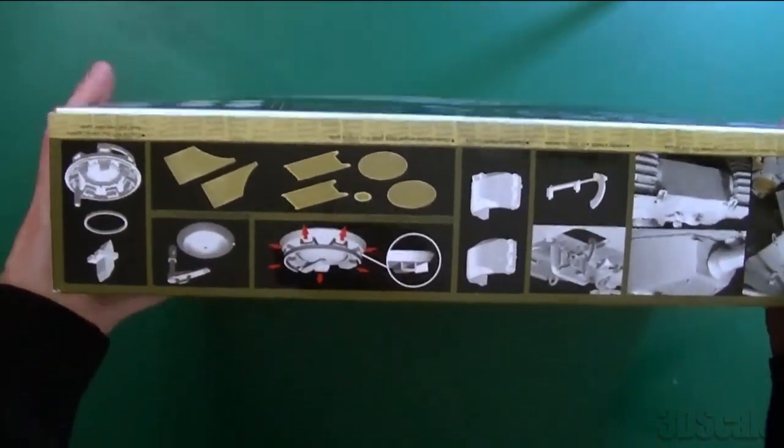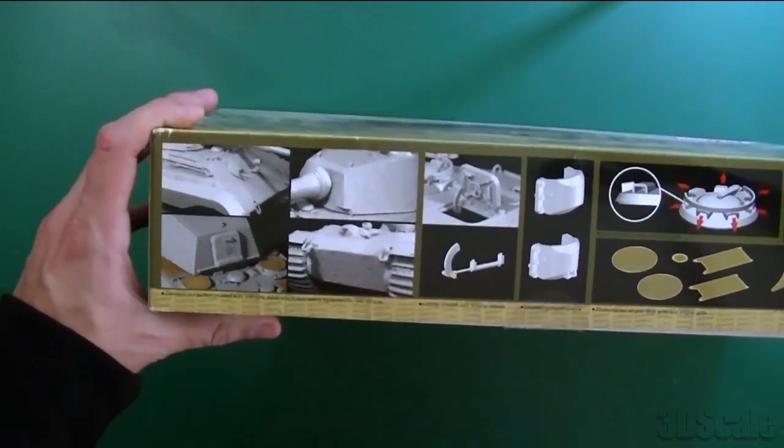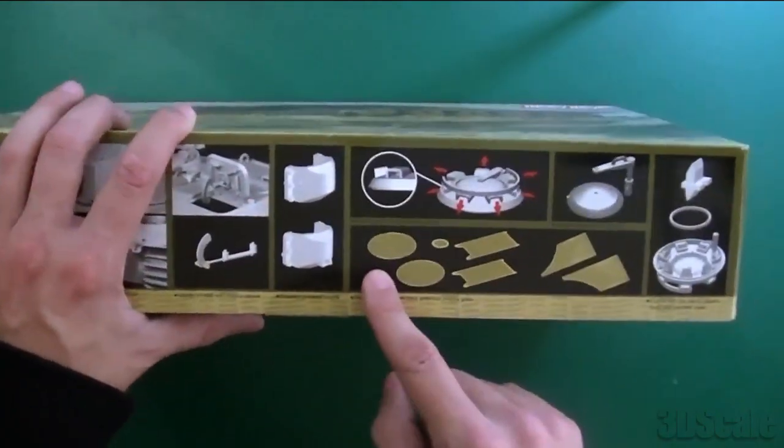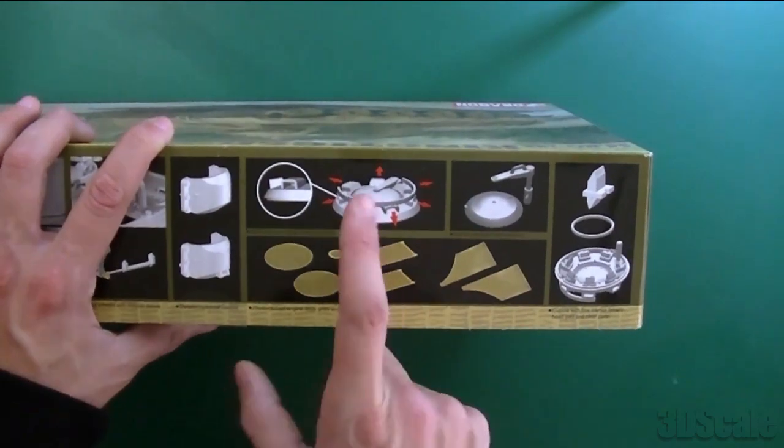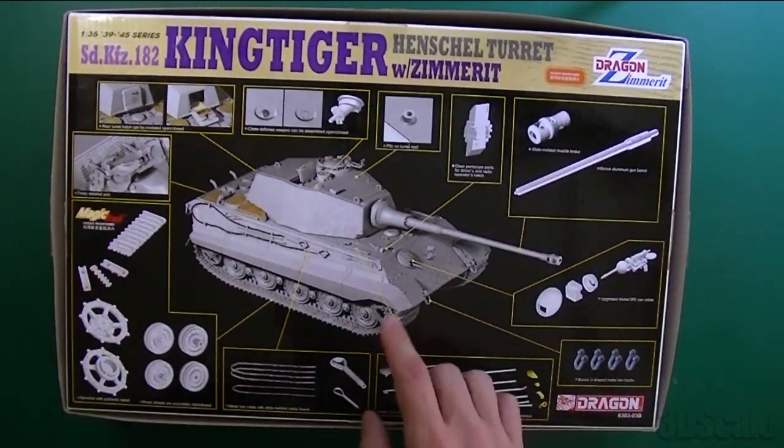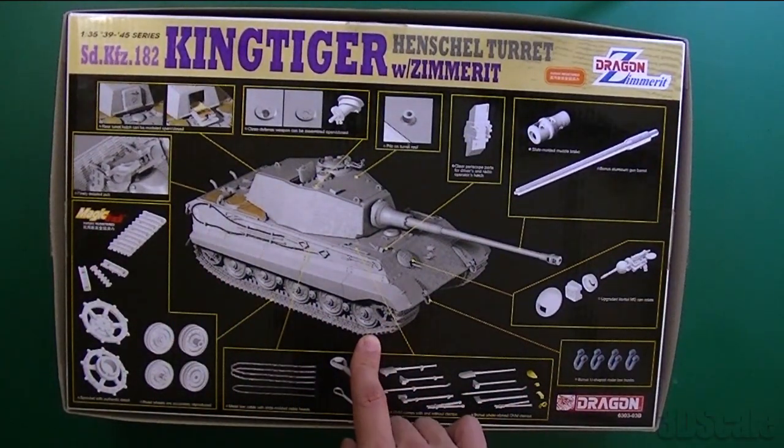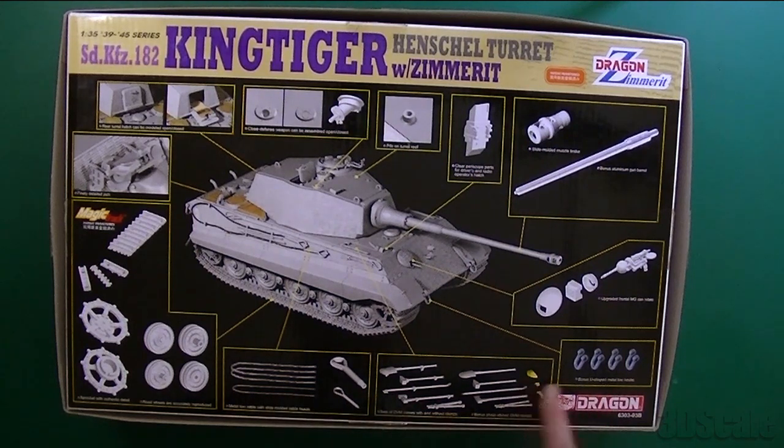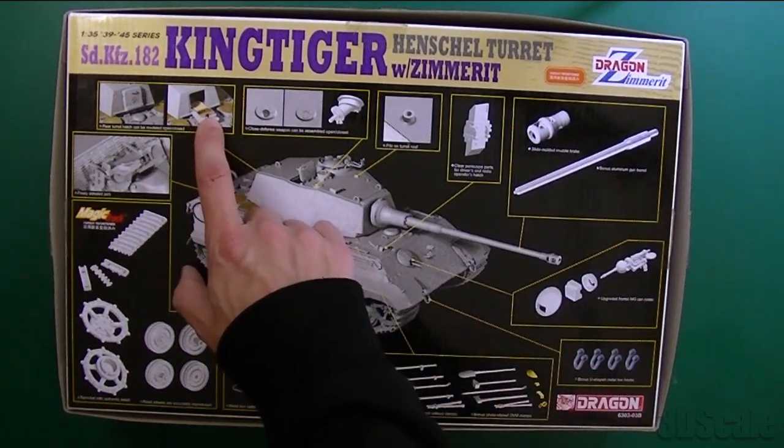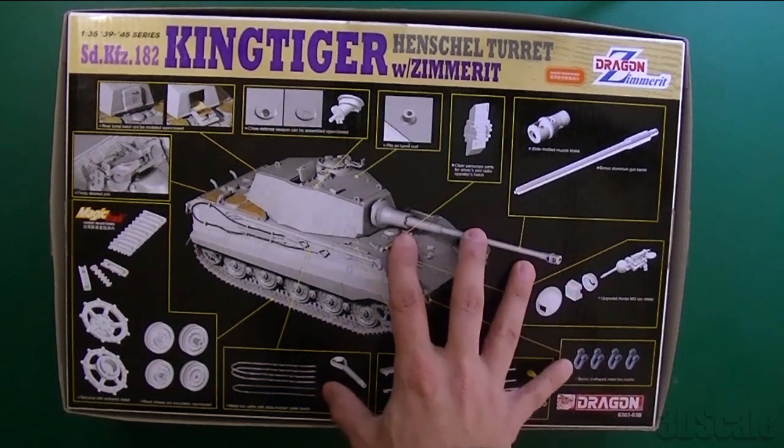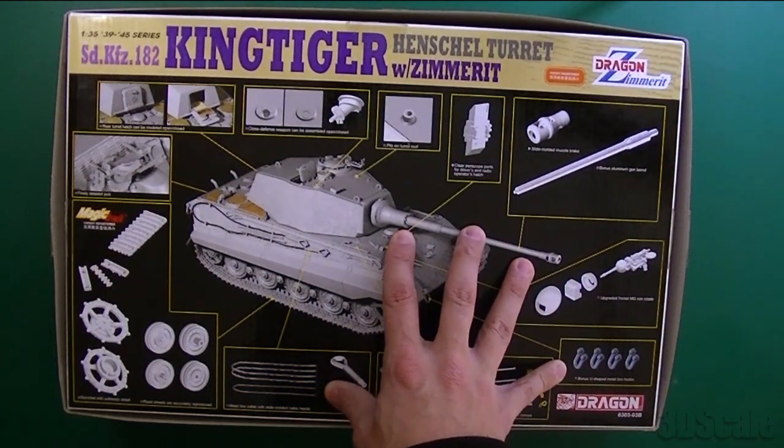Looking at this stuff, here's what the Zimmerit looks like, and it actually is pretty random. The loader's hatch has a bracket. We do have PE for this. Slide-molded cupola. We can see that it has magic tracks, which is fantastic in this particular version. Metal gun barrel, metal tow cables, PE clamps, metal tow shackles. And then there's some PE for this part up here, the escape hatch.